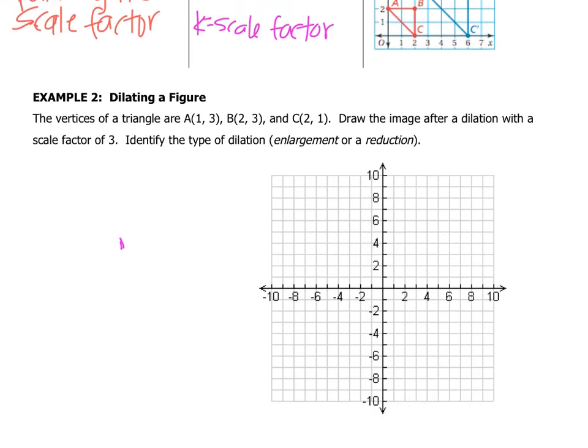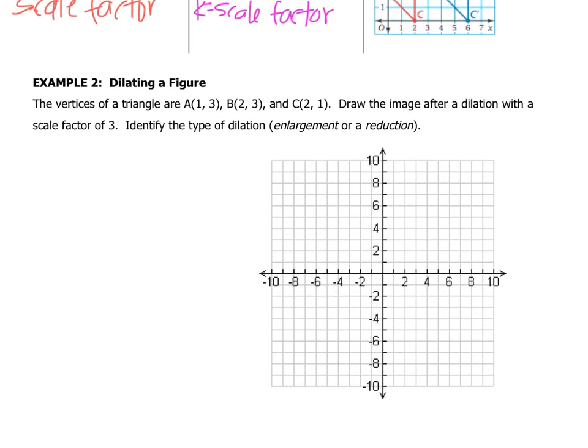Let's check out example two. The vertices of a triangle are given. We have to draw the image after a dilation with a scale factor of three. And then we have to say what kind of dilation it was. Was it enlargement or a reduction? So we're going to pause the video right now, and you're just going to graph triangle ABC. Alright, so we've got this super tiny looking triangle. And for this one, we're actually going to get the coordinates first. It's kind of like when we did the rotation, we got the coordinates and then we plotted it.